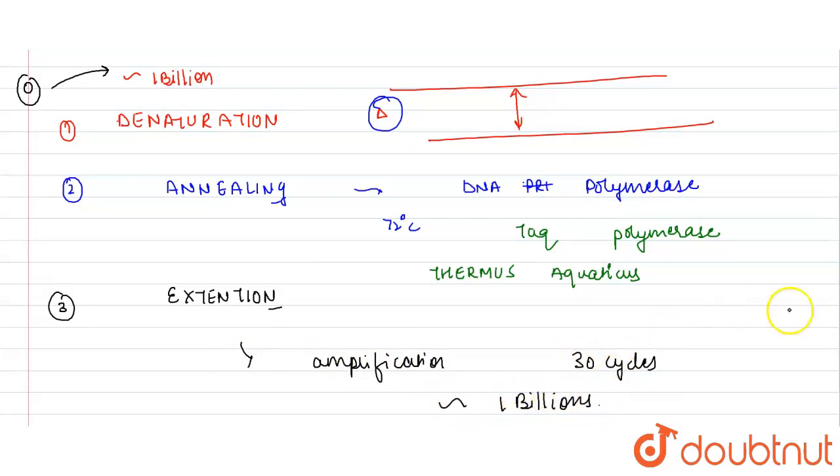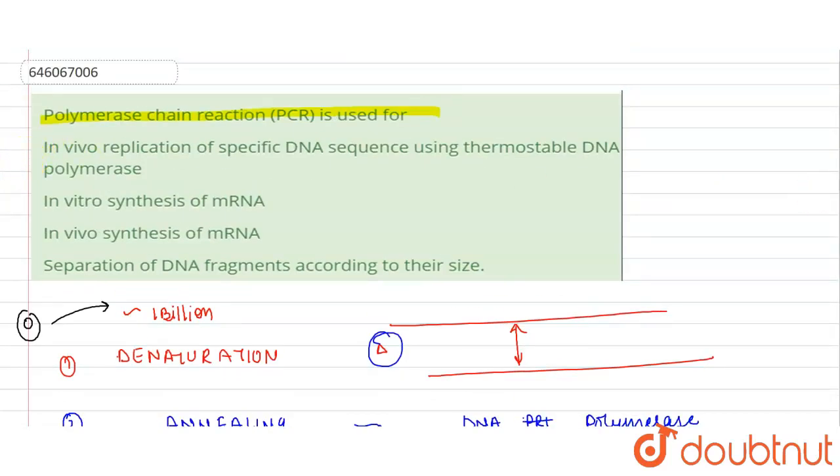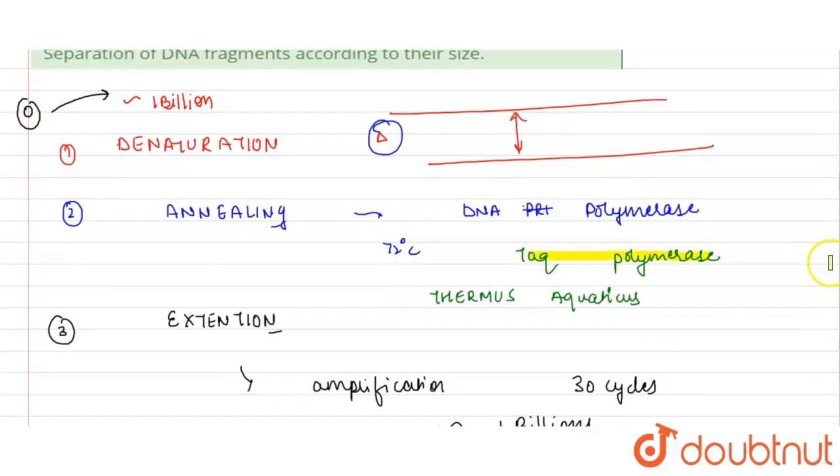So the correct answer, let's see over here. The first is in vivo replication of specific DNA sequence using thermostable DNA polymerase. Yes, this is the right answer. What is the thermostable polymerase? Taq polymerase.